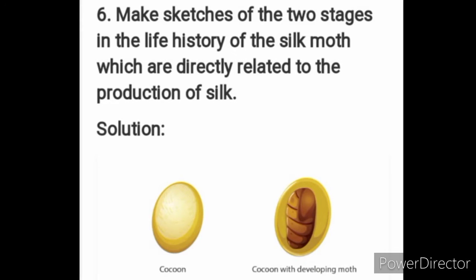Question number 6: Make sketches of the two stages in the life history of the silk moth which are directly related to the production of silk. The solution is the sketch of the cocoon, and the second one is the cocoon with a developing moth.